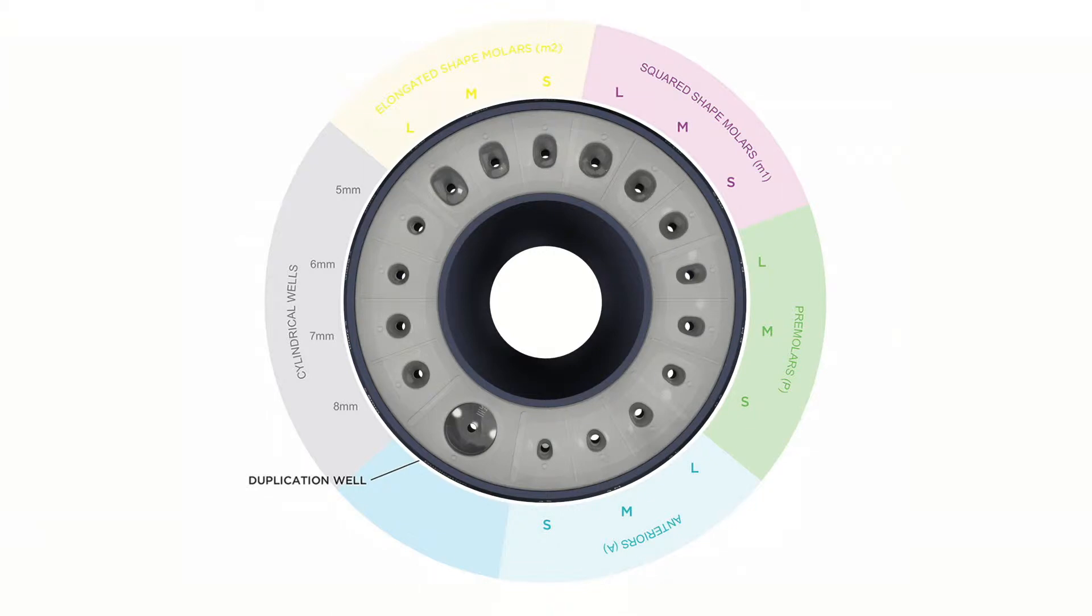The third group refers to the shape and sizes of elongated molars: small, medium, and large.